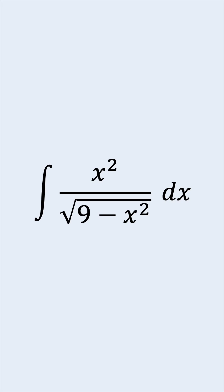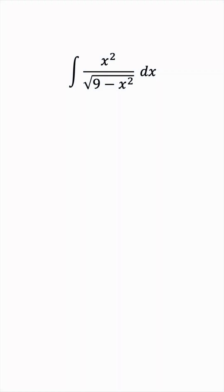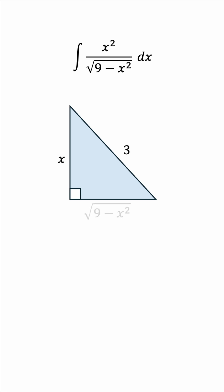How do we solve this integral? The denominator reminds us of the Pythagorean theorem because if we have a right triangle with hypotenuse 3 and side x, then the other side would be the square root of 9 minus x squared by the Pythagorean theorem.